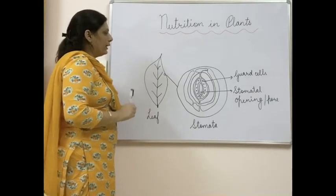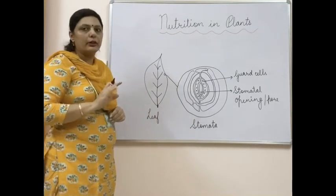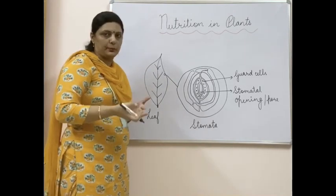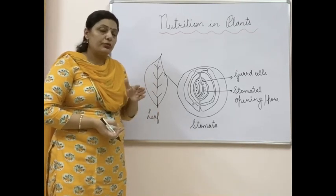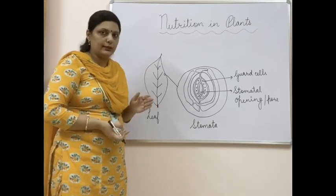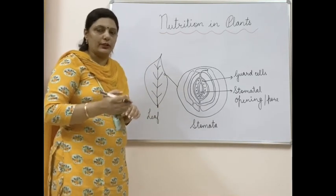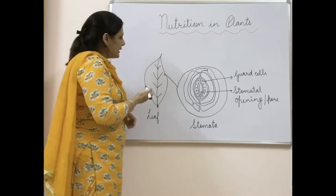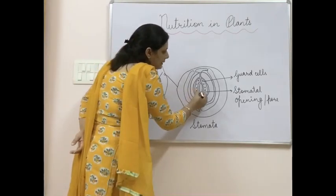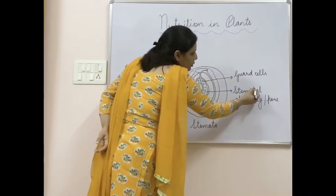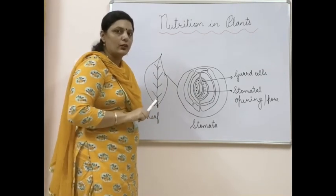One more thing you must know while understanding photosynthesis is the stomata. Carbon dioxide is taken up by the leaves from the atmosphere, and oxygen is released into the atmosphere. Which part of the leaf actually does this? That is the stomata. Stomata are basically pores present on the surface of the leaf. They can be present on the upper surface as well as the lower surface. Through this stomatal pore or stomatal opening, exchange of gases — carbon dioxide and oxygen — takes place.